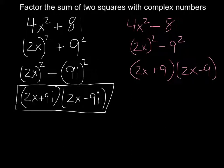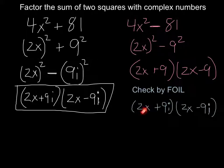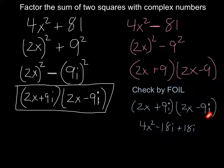Let's do a quick check to show that it works. Using the FOIL method, 2x times 2x is 4x², my middle terms are actually going to end up canceling, and my last term is going to be 9i times negative 9i, which is minus 81i².